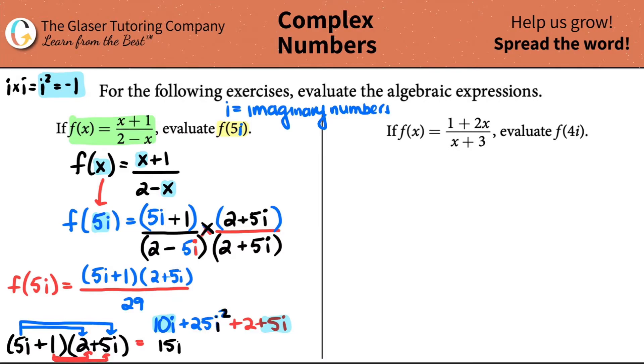Remember, an i squared is a negative 1. So this would technically be plus 25 times a negative 1 plus 2. 25 times a negative 1 is negative 25. Negative 25 plus 2 is a negative 23. So I'm just going to rearrange this. This whole thing would equal negative 23. And remember, real numbers have to come first and then imaginary numbers. So this would have to be rewritten as negative 23 plus 15i.